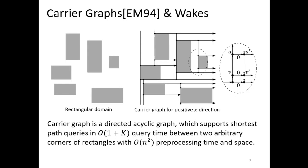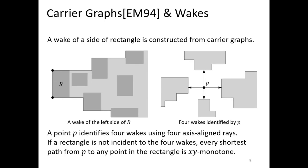Our data structure is based on the carrier graph of L-Indian Mitra. They construct carrier graphs which are directed acyclic graphs for each direction of axis. Using the carrier graph, computing all-pair shortest paths takes O(N²) time and space. From the carrier graph, we construct wakes of each side of rectangles. From now on, we just consider the wake of the left side; wakes of the other sides can be handled similarly.